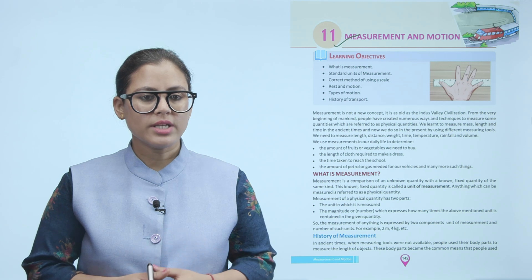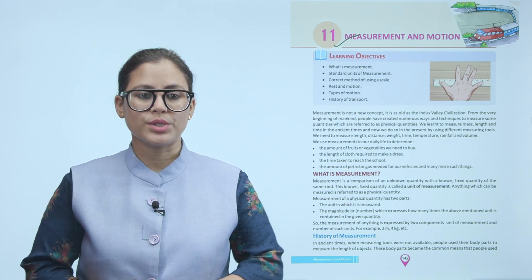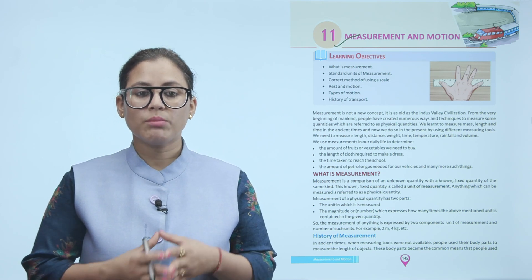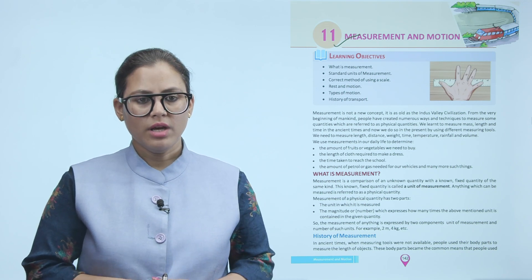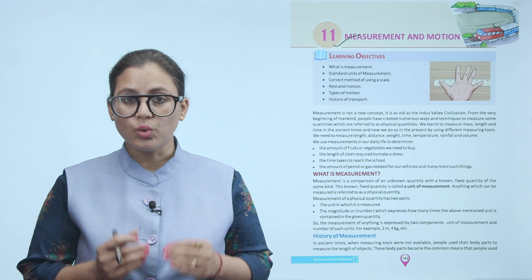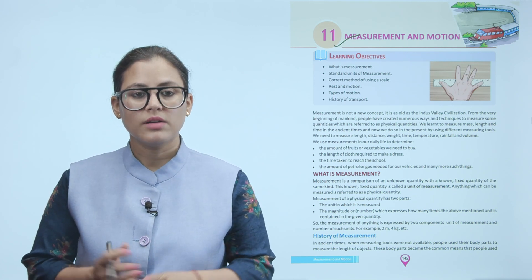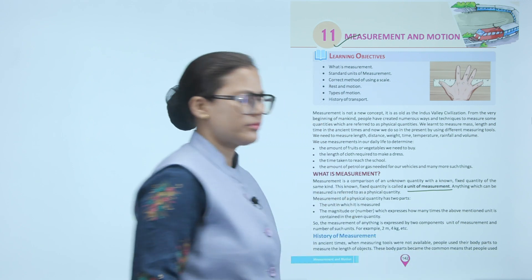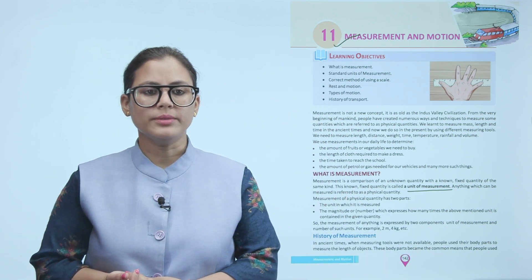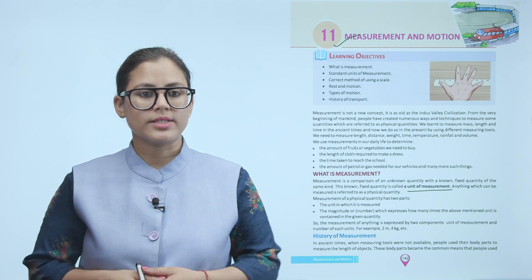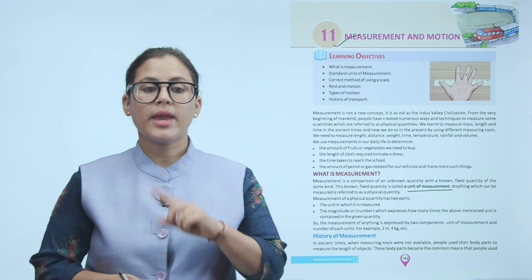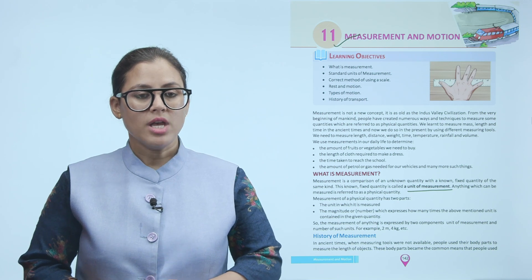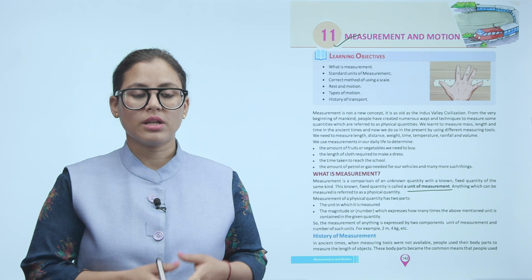What is measurement? Measurement is a comparison of an unknown quantity with a known fixed quantity of the same kind. This known fixed quantity is called a unit of measurement. Anything which can be measured is referred to as a physical quantity. The measurement of a physical quantity has two parts: the unit in which it is measured, and the magnitude or number which expresses how many times the above-mentioned unit is contained in the given quantity.